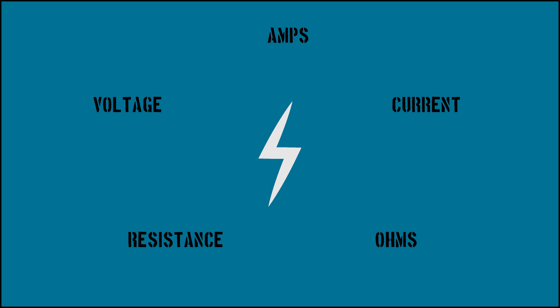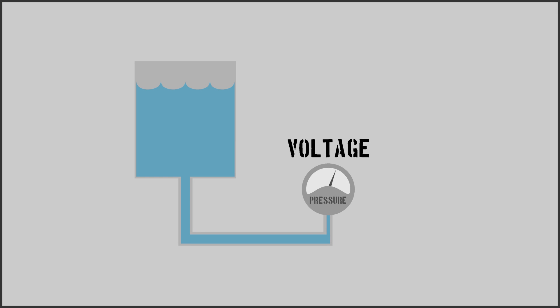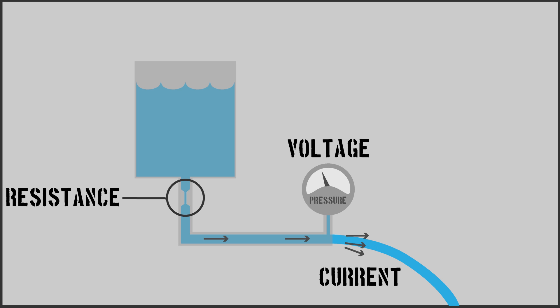To understand these components, you need to understand the basic properties of electricity. First, voltage can be interpreted as electric pressure. Current, as electric flow, and resistance, as electric obstruction.